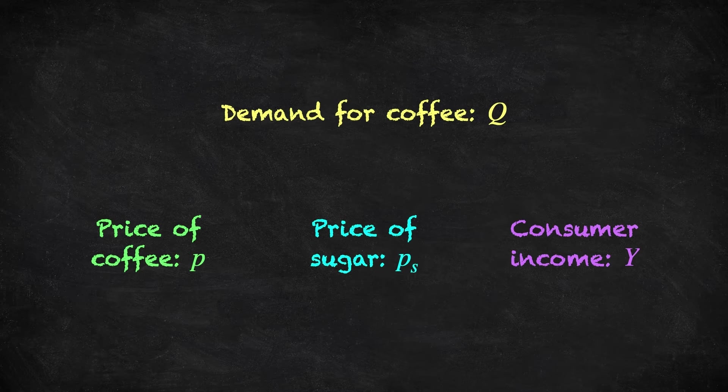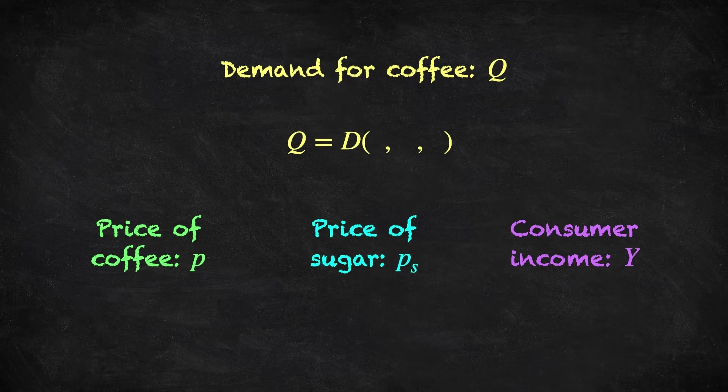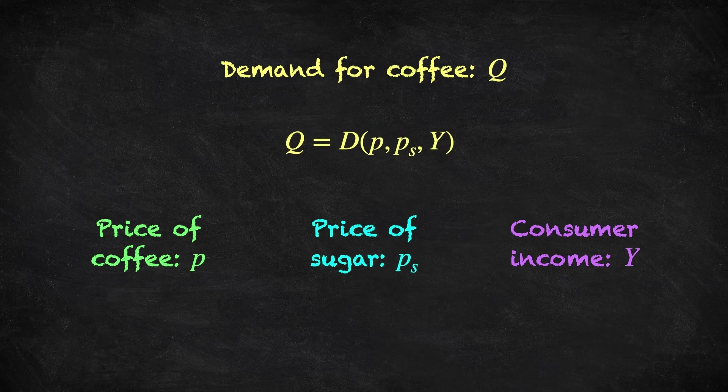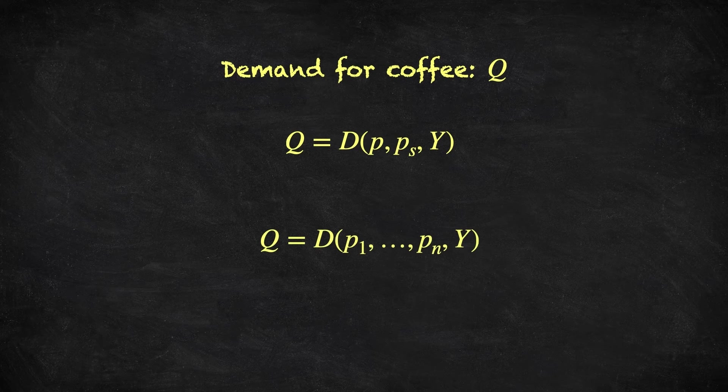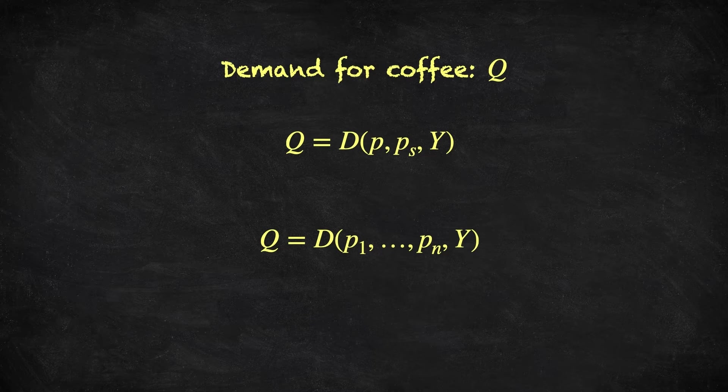To analyze consumer demand, we need a way to model it, which means describe mathematically the relationship between these particular variables and the consumer's demand. To do this, we use the idea of a demand function. So we'll write that Q, the quantity of coffee demanded, is some function, capital D, of the price of coffee, the price of sugar, and the consumer's income. So if we plug these values into the demand function D, out pops the quantity demanded. This idea extends to the case where there are many goods, and it's common in microeconomic theory to think of demand as a function of the prices of all goods and the consumer's income.